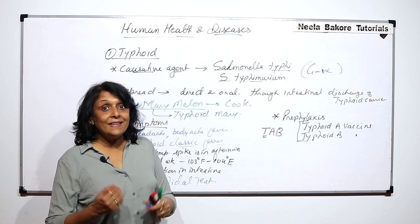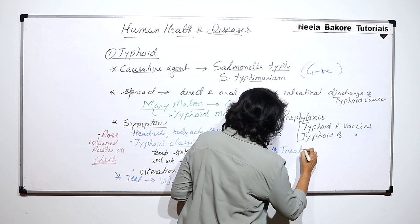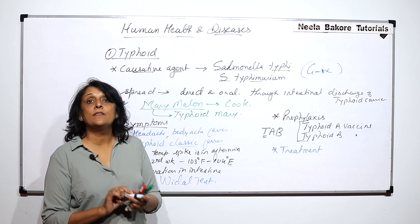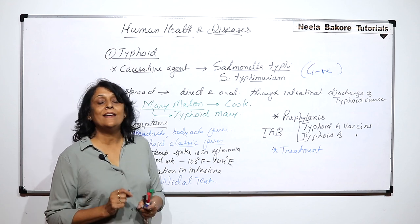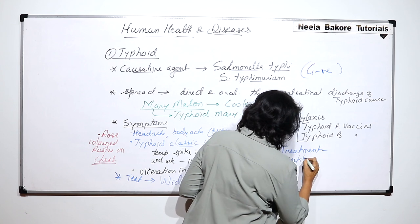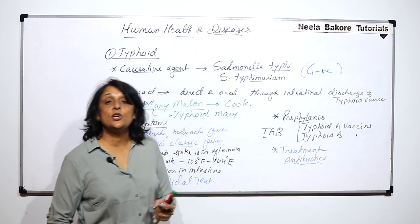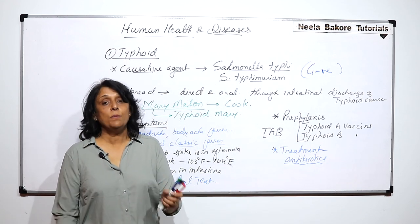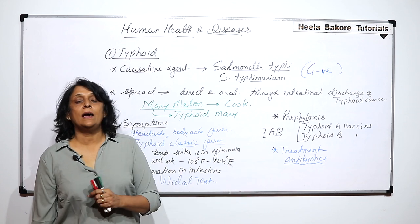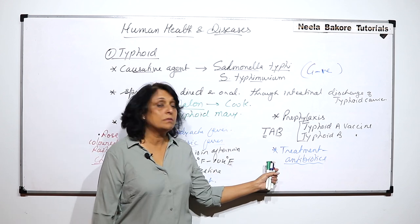But if we do get the disease, then treatment is mainly antibiotic. Antibiotics are substances which inhibit the growth of or kill bacteria, and there are many antibiotics which are very effective in the treatment of typhoid.